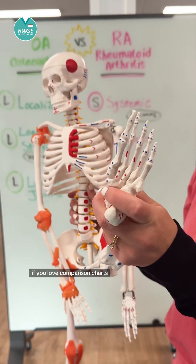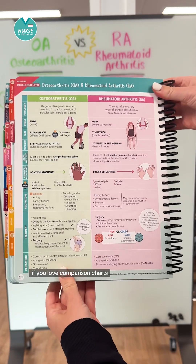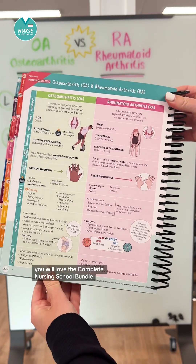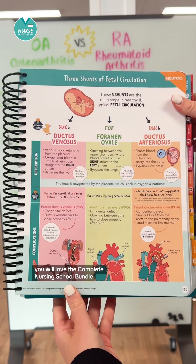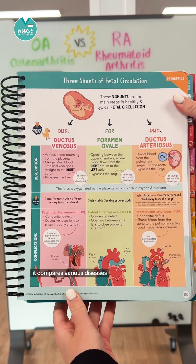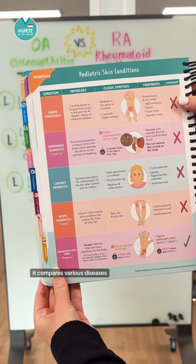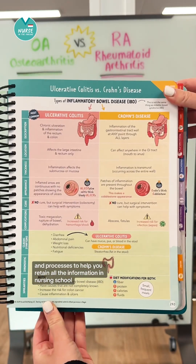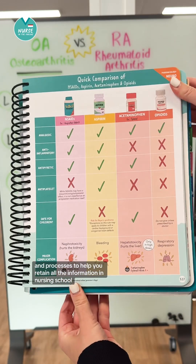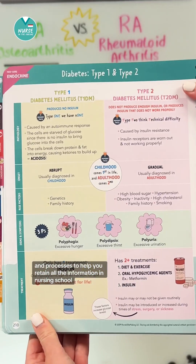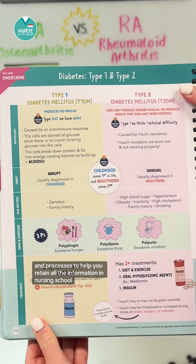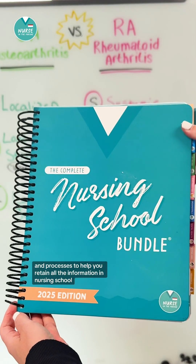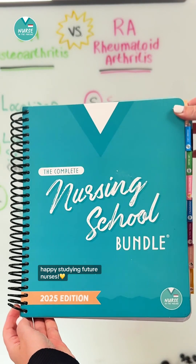If you love comparison charts, you will love the Complete Nursing School Bundle. It compares various diseases, medications, and processes to help you retain all the information in nursing school. Happy studying, future nurses.